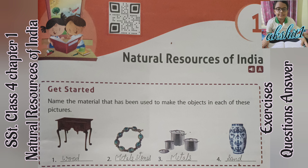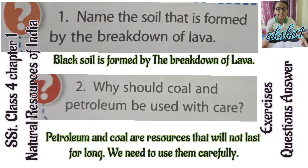Exercises, Questions, Answers. Let's start. Name the material that has been used to make the objects in each of these pictures. First, the table is made out of wood. Second, the bracelet is made out of metals and stones. Third, the pots are made out of metals. Fourth, the vase is made out of sand.